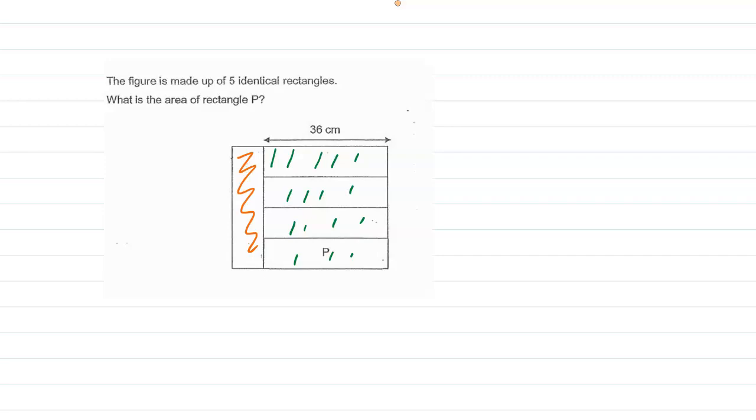We know the length of rectangle P is 36 centimeters, but we do not know this side. So how can we figure this out? Just observe the figure carefully and we can see that...